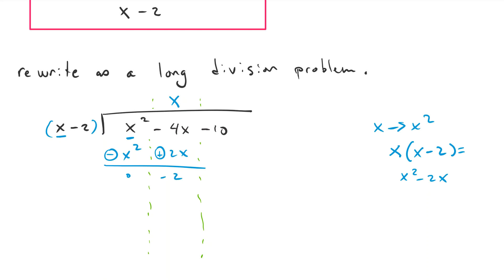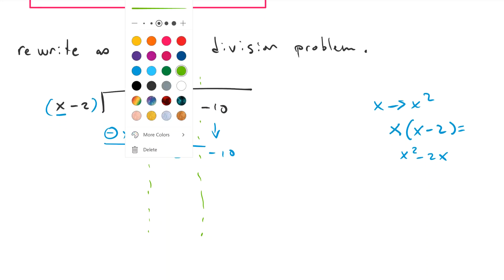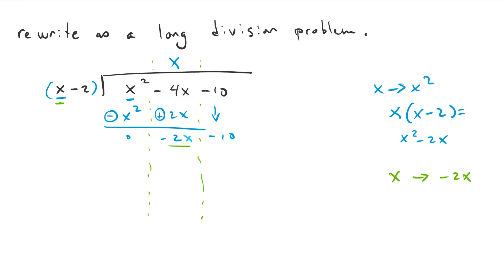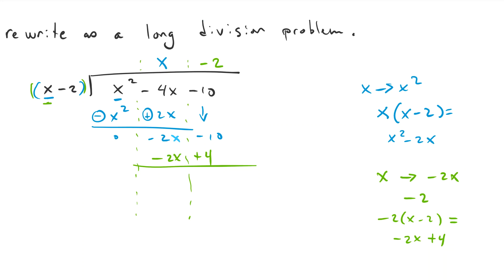We get 0 here, and negative 2x. I can pull down negative 10, our next term. So now what we want is we want x to become negative 2x. So we need to multiply it by negative 2. So we'll put a negative 2 up here in the constant column. Negative 2 times x minus 2 gives us negative 2x plus 4, which goes underneath the negative 2x minus 10. We change the sign, which gives us 0 here and a negative 14 here.